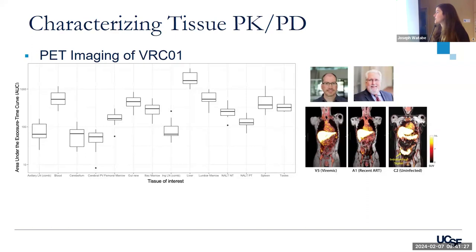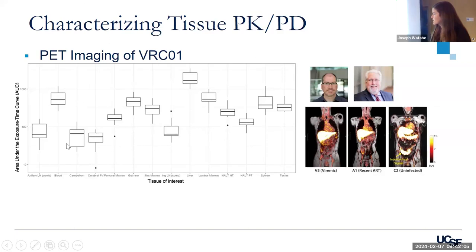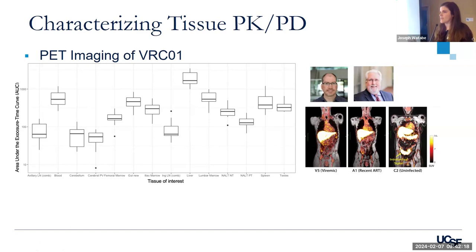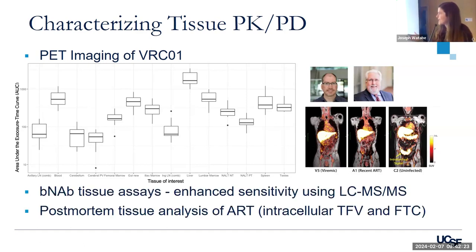The second area is characterizing tissue exposure response. I have access to data from Tim and Henry Van Brocklin's PET imaging — a VRCO1, which is an HIV-specific BNAB. They've done PET imaging studies in viremic, ART, and uninfected individuals. We analyzed that data — the exposure overall across tissues of interest, on log scale. Liver is up here, with a lot of other tissues, and some tissues like lymph nodes and cerebral and brain sites are having just way lower exposure than blood and liver and other highly perfused areas. In addition to that, my group is developing BNAB tissue assays. A lot of BNABs are quantified using ELISA and only in plasma, and there aren't validated assays for tissue. We want to understand how much BNABs are getting into tissues and need to develop novel methodologies with LC-MS/MS to do this.